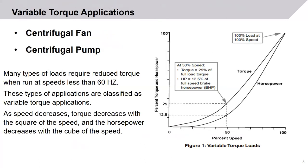There are two types of applications to consider. Variable torque applications include centrifugal fans and centrifugal pumps. In these types of loads, they require less torque at speeds less than 60 hertz. There are significant energy savings available by running below 60 hertz. As speed decreases in these applications, torque decreases with the square of the speed and motor horsepower decreases with the cube of the speed.